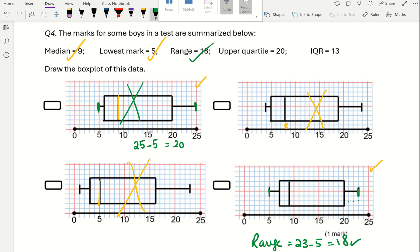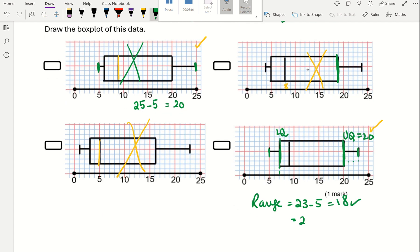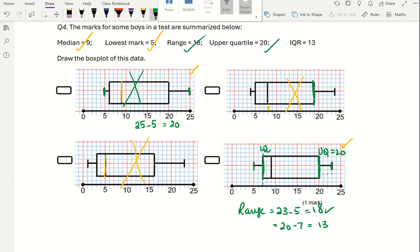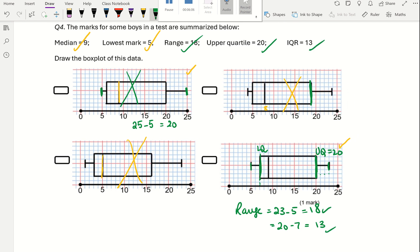Upper quartile is 20, yes. And interquartile range, well the interquartile range is the upper quartile, this one which is 20, upper quartile 20, take away the lower quartile which is that here. The lower quartile is 7. So that's 20 minus 7, which is 13, which is what we want. So our answer is this one.